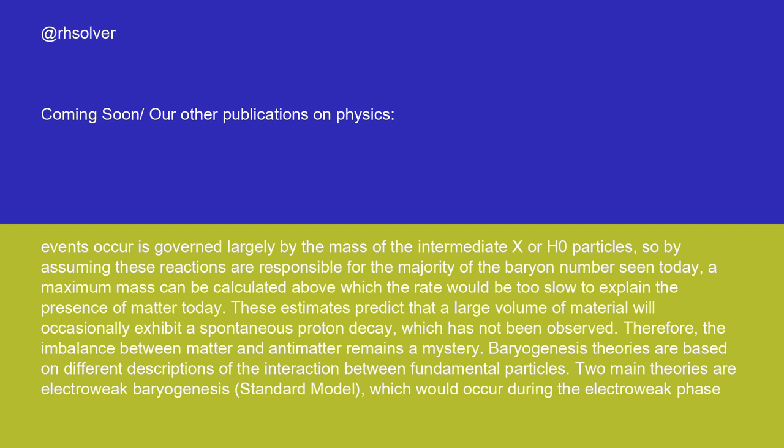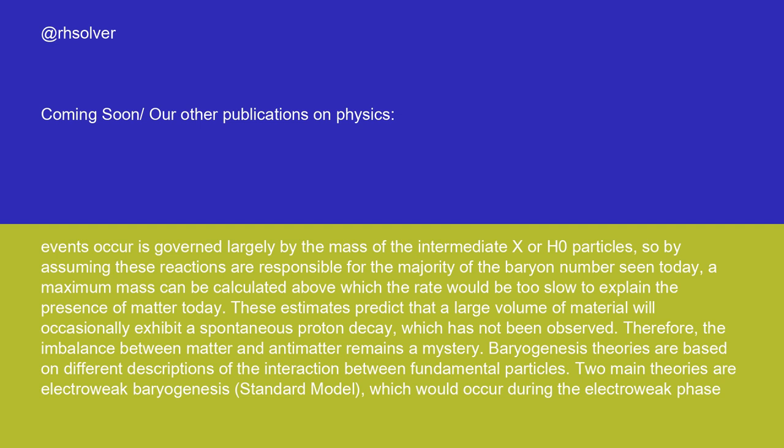Baryogenesis theories are based on different descriptions of the interaction between fundamental particles. Two main theories are electroweak baryogenesis (standard model), which would occur during the electroweak phase transition, and GUT baryogenesis, which would occur during or shortly after the grand unification epoch. Quantum field theory and statistical physics are used to describe such possible mechanisms.